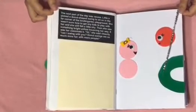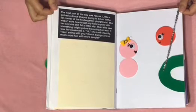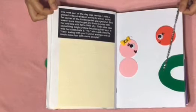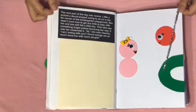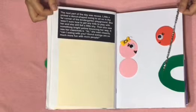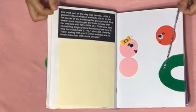The next part of the day was recess. Little A picked a donut-shaped swing to sit on in the far corner of the kindergarten playground. She wasn't sure how to get any of the kids to play with her, and she still felt a little shy. Then she saw something bright yellow bouncing her way. It was her classmate, B. Hi, she said cheerily. Can I swing with you? Donut swings are so much more fun with more people. Here we have Little B looking at Little A swinging on a green donut swing.